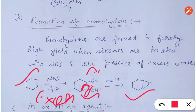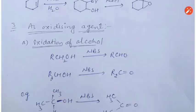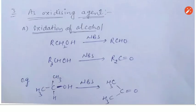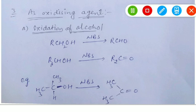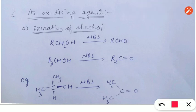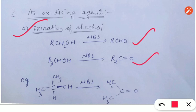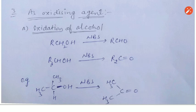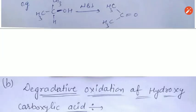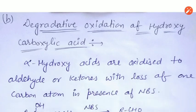Another important reaction of N-Bromosuccinimide is oxidation. Primary alcohols are oxidized to aldehydes and secondary alcohols are oxidized to ketones using N-Bromosuccinimide. For example, isopropyl alcohol is converted to acetone with N-Bromosuccinimide.